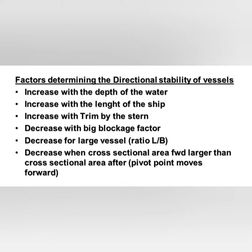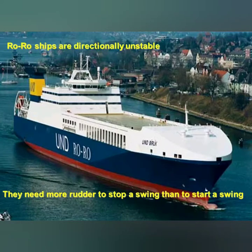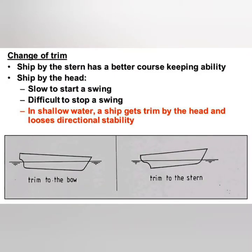Directional stability reduces with the blockage factor for larger ships, and when the cross-sectional area forward is larger than the cross-sectional area aft, because the pivot point again moves forward. Considering these three factors — blockage factor, large vessel, and cross-sectional area forward — it basically means the closer a ship is to a box-shaped vessel, the lesser its directional stability. In all these cases the pivot point tends to be more forward, so any force acting aft — like rudder force or transverse thrust by the propeller — would make the ship directionally unstable. Thus ships like car carriers and VLCCs, which are more box-shaped, are less directionally stable compared to container ships and similar profiles.